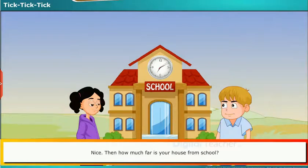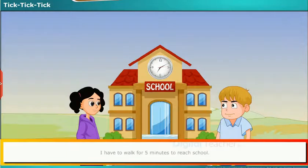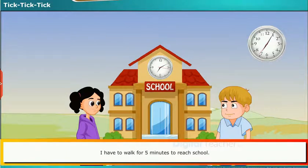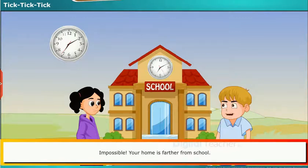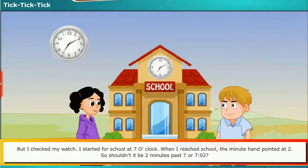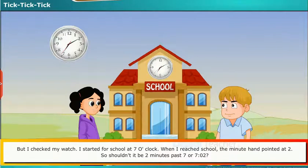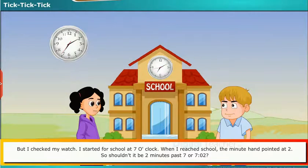Nice! Then, how far is your house from school? I have to walk for 5 minutes to reach school. I just walk for 2 minutes to reach school. Then how can your home be farther from school? But I checked at 7 o'clock in the morning, and when I reached school the minute hand pointed at 2. So shouldn't it be 2 minutes past 7, or 7:02?